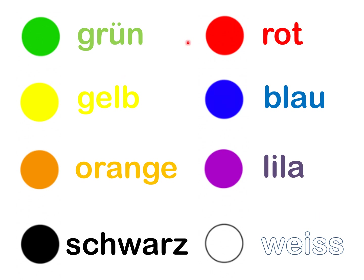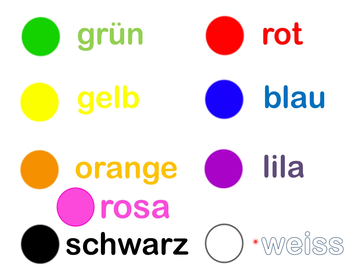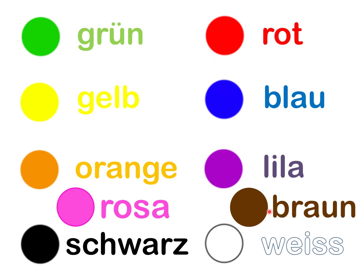We have grün, gelb, orange, schwarz, rot, blau, lila, and weiß. We also learned three bonus colors: this one here was rosa. And this one was brown — braun. Then over here that color is grau.